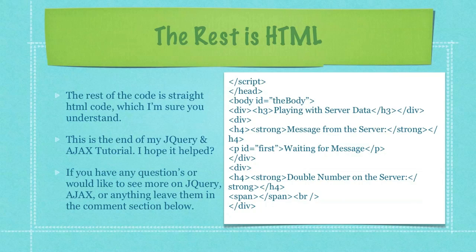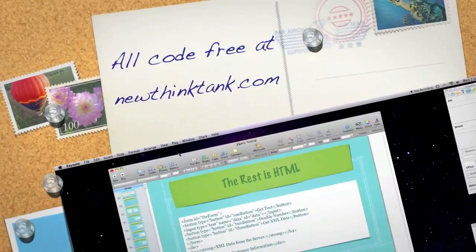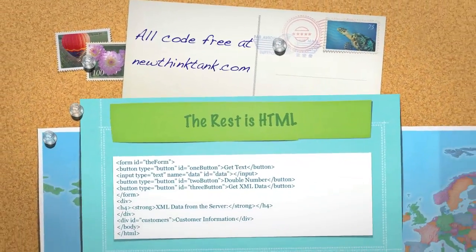And the rest of the code is straight HTML code, which I am sure you understand. This is the end of my jQuery and Ajax tutorial — I hope it helped. If you have any questions or would like to see more on jQuery, Ajax, or anything else, leave them in the comment section below. You can see here the final part of the HTML file. Till next time.